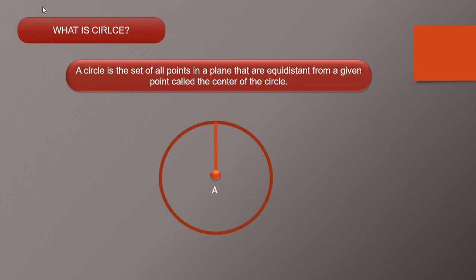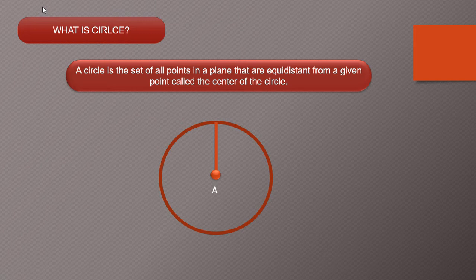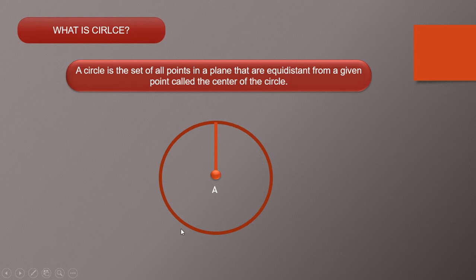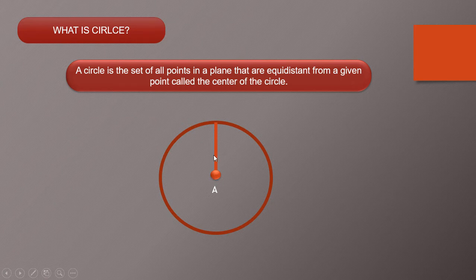Before starting our algorithm we need to understand what is circle. Circle is the set of all the points in the plane that are equidistant from a given point. Consider this is the circle and these are the points which are present on perimeter of the circle and which are equidistant from this center, and that equidistance is nothing but radius of that circle.